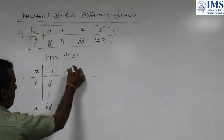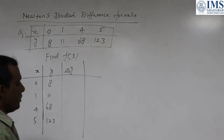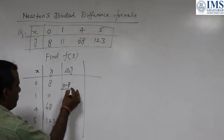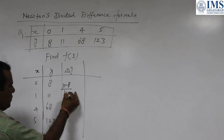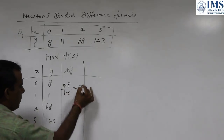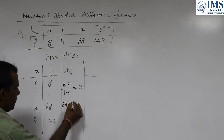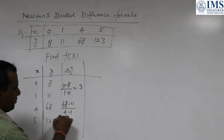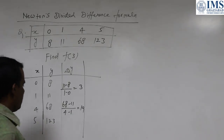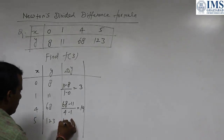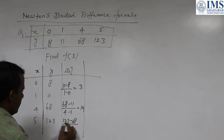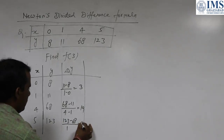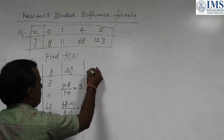Now the first divided differences: (11 minus 8) divided by (1 minus 0) equals 3. Second: (68 minus 11) divided by (4 minus 1) equals 57 divided by 3, which is 19. Third: (123 minus 68) divided by (5 minus 4) equals 55 divided by 1, which is 55.